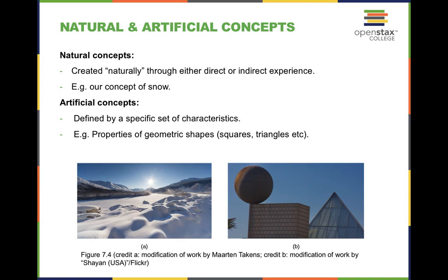Artificial concepts are defined by a specific set of characteristics. This is found in mathematics, like your properties of geometric shapes such as squares and triangles. Artificial is man-made, created by a specific set of characteristics, which is commonly found in mathematics.